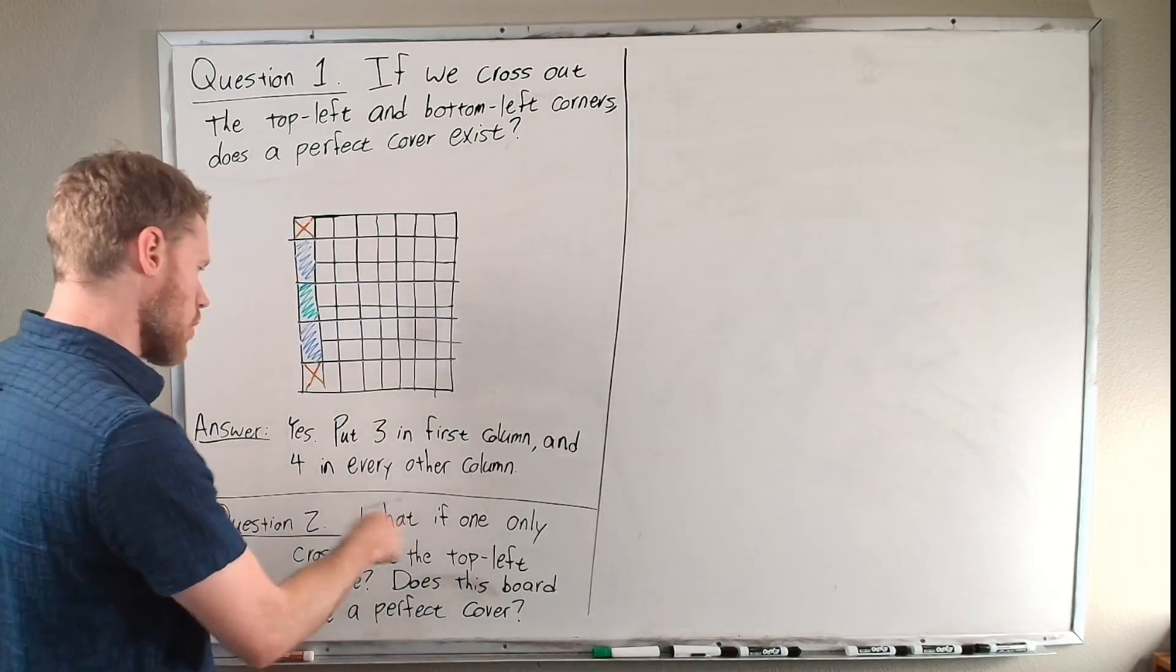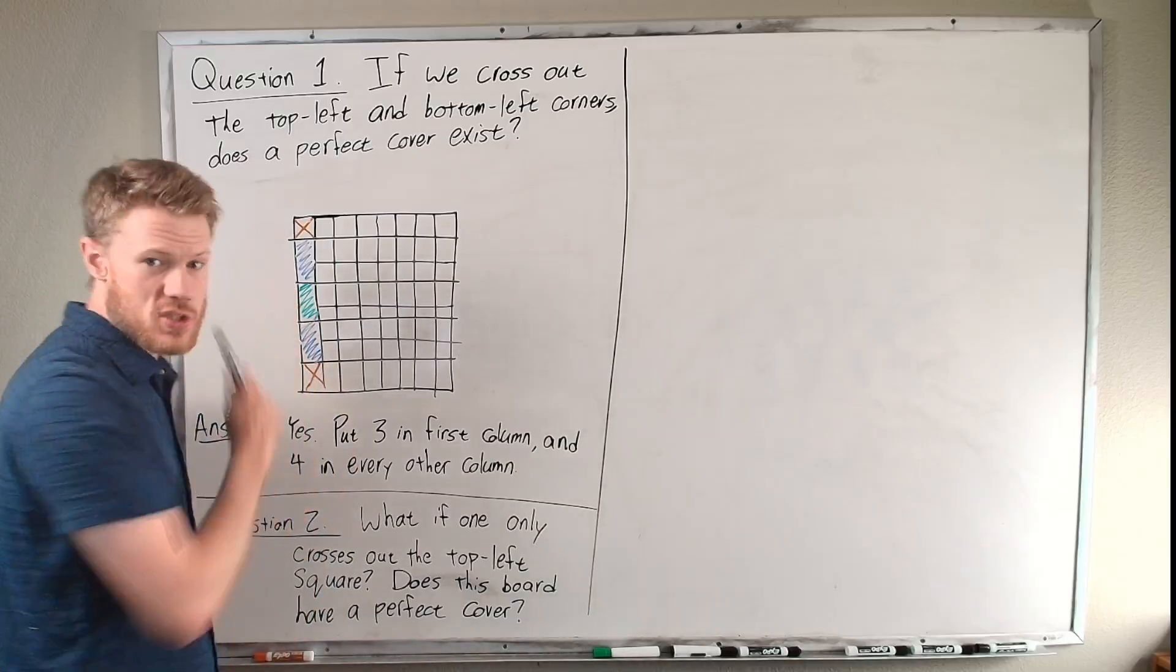Okay, now let's get even more interesting. Let's ask a second question. What if one only crosses out the top left square of the chess board? Does this board have a perfect covering or does it not? Take a moment and think about that. See what you think the answer is. And go ahead and pause the video to really put some thought into it. Okay, I hope you took some time to think about it. You know, if you started with this board and you tried to cover up with dominoes, what would you do? What would your attempt be?